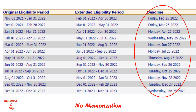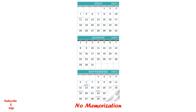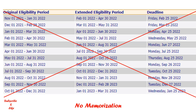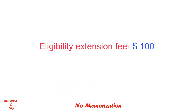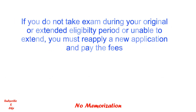Plan your exam for when you feel you are ready to take it, not just a random choice. If you already have your assigned eligibility period, target the first month. If you cannot make it, move to the second month, then the third month as a last option, so that you do not need to request an extension. Also note that an extension comes with a cost — the current fee is $100 US dollars. Finally, if you do not take your exam during your original or extended eligibility period, or if you are unable to extend it, you must reapply by submitting a new application and fees. Please plan accordingly — it will save a lot of time and money.